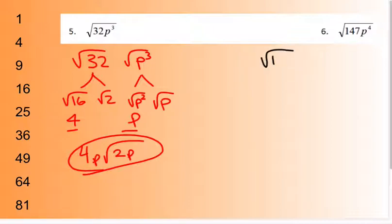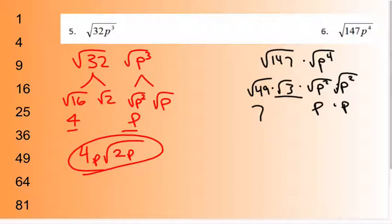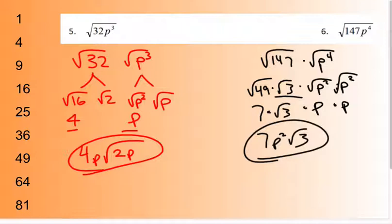Number six: √(147p⁴). Take 147 and split it up into 49 and 3. You can try dividing by different perfect squares — 4, 9, 16, 25 — to figure out what works. Square root of 49 is 7, square root of 3 stays. Square root of p squared is p, and square root of p squared is p again. Multiply it all together for the answer: 7p² square root of 3.